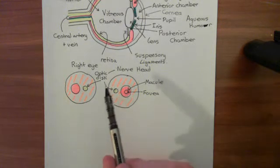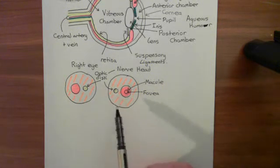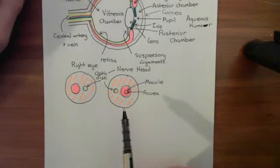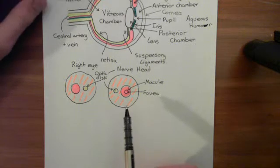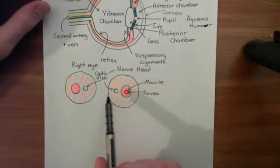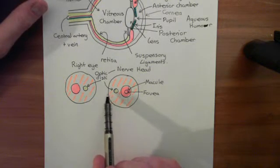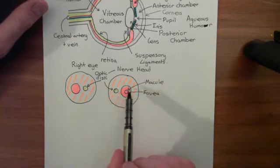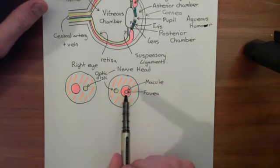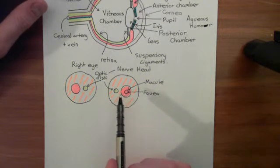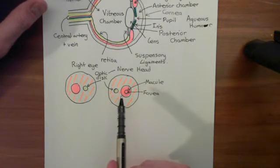We've drawn pictures of what you see when you use an ophthalmoscope to look at the back of the eye. Two important landmarks that you see are the optic disc, which is very medial, and the macula, which is a little bit more lateral. The macula contains the fovea, which is the portion of the retina that has the highest visual acuity.